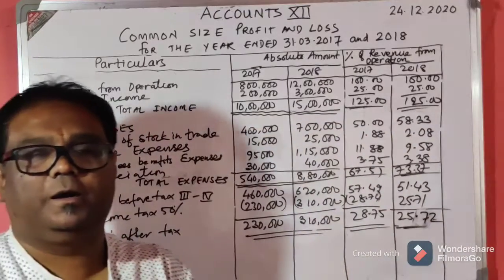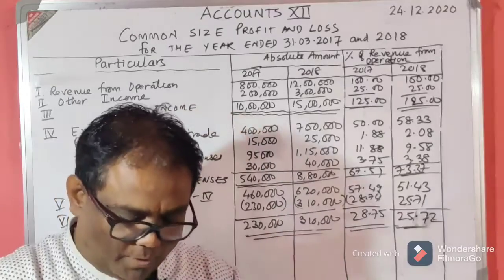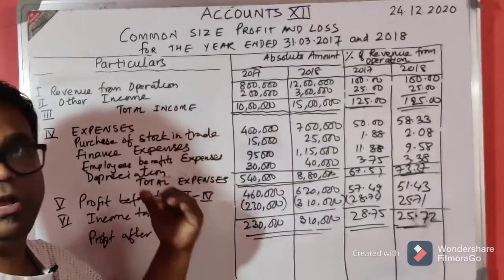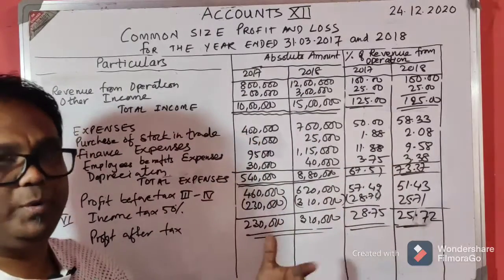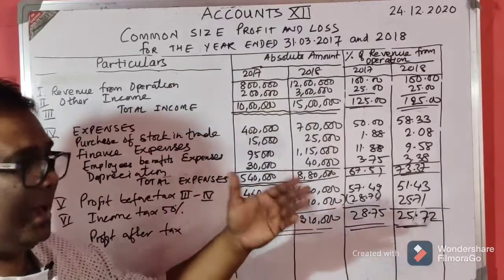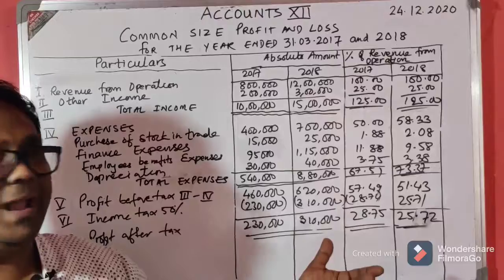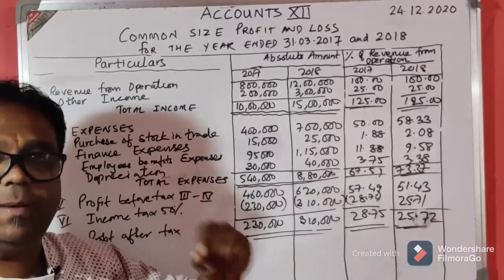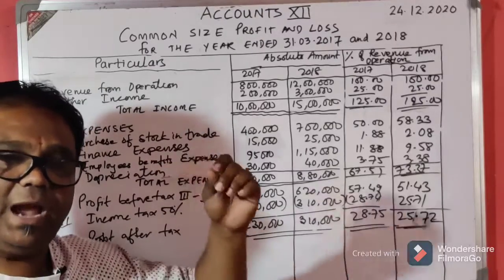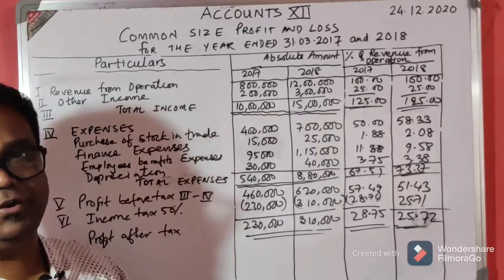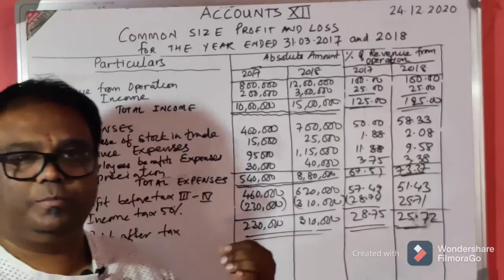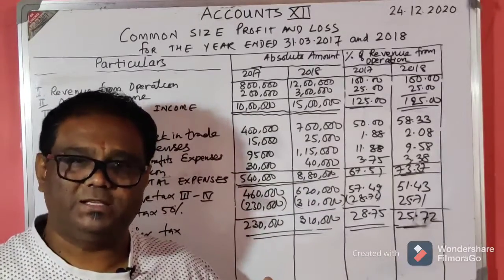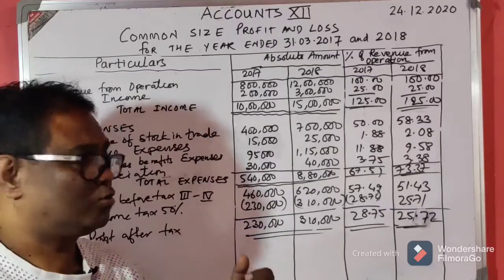This is how we prepare the common size profit and loss account for 2017 and 2018. It is similar to common size balance sheet, but the key difference is: in the balance sheet every item is divided by the total of the balance sheet, whereas here every item is divided by revenue from operations into 100.